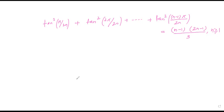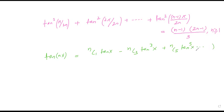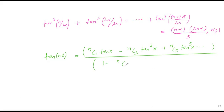If you have the formula, tan(Nx) is like: Nc1·tanx − Nc3·tan³x + Nc5·tan⁵x − ... upon 1 − Nc2·tan²x + Nc4·tan⁴x − ...